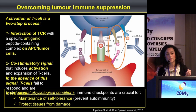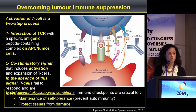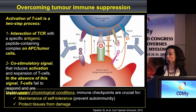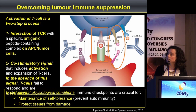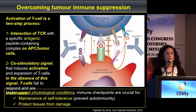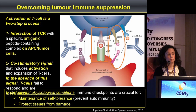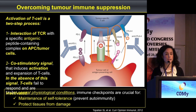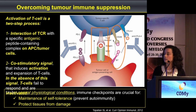To understand checkpoint inhibitors, we need to understand how a T cell is activated. For a T cell to be active, two signals are required. The first is the recognition of the antigen by the T cell receptor, where the antigen is presented in a peptide-MHC complex either by the tumor cell or by an antigen-presenting cell. The second signal is the co-stimulatory signal; without it, T cells fail to respond and may become inactivated.